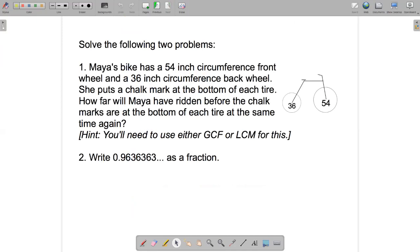So in this problem Maya has a bike with a larger front wheel than back wheel. The front wheel has a 54 inch circumference and the back wheel has a 36 inch circumference.